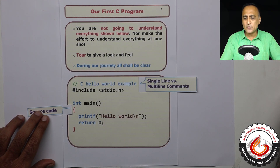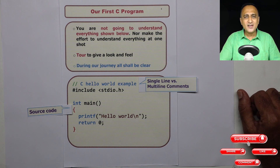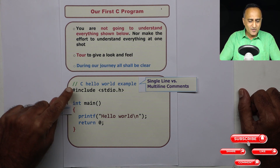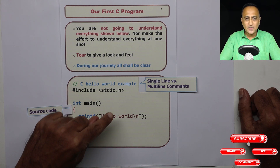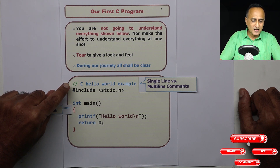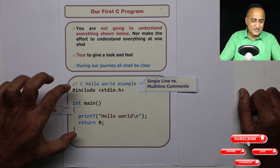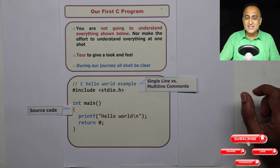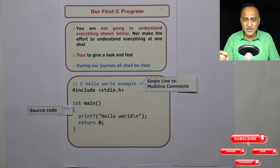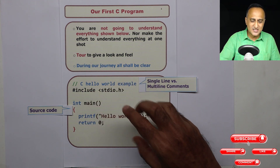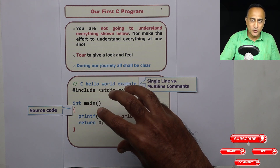Hello World is a famous program generally used for teaching C as a first example by most authors, including Kernighan and Ritchie. If you look at this particular piece of text, something which starts from the green double slash and ends at the red flower bracket, this is known as your source code. Source code is a mixture of English and mathematical symbols, so just don't worry about what everything written in this is.